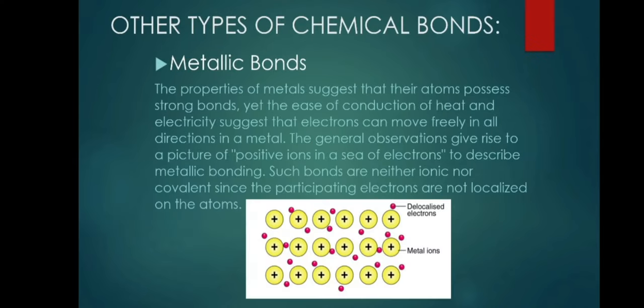There are other types of chemical bonds, one of which is metallic bonds. The properties of metals suggest that their atoms possess strong bonds, yet the ease of conduction of heat and electricity suggest that electrons can move freely in all directions in a metal. The general observations give rise to a picture of positive ions in a sea of electrons to describe metallic bonding. Such bonds are neither ionic nor covalent, since the participating electrons are not localized on the atoms.